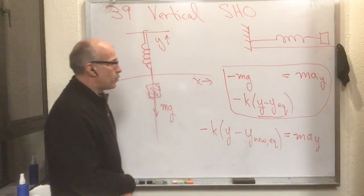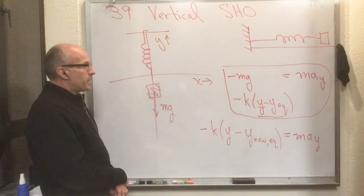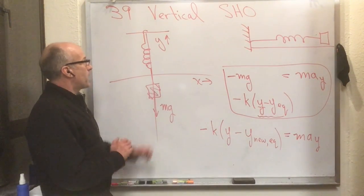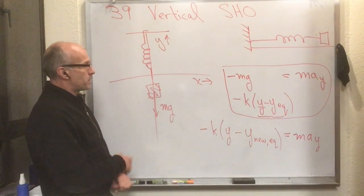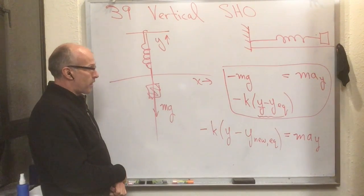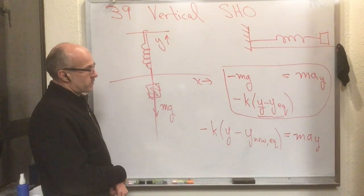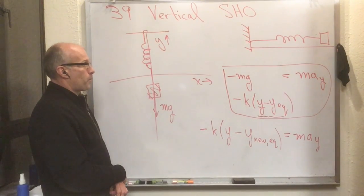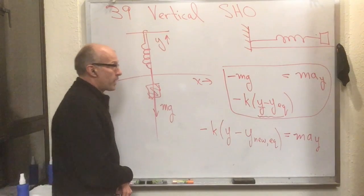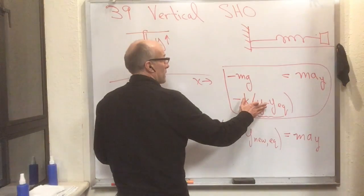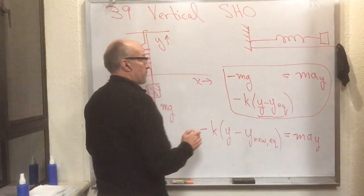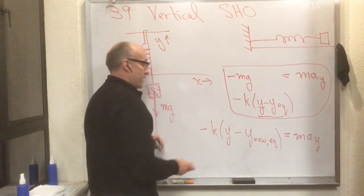And the interpretation of this y_new_equilibrium point is that it's the point where the force upward from the spring balances the force downward of gravity. So the balance point isn't where the spring has no force. The balance point is now where the spring has the same force but to oppose the gravity.